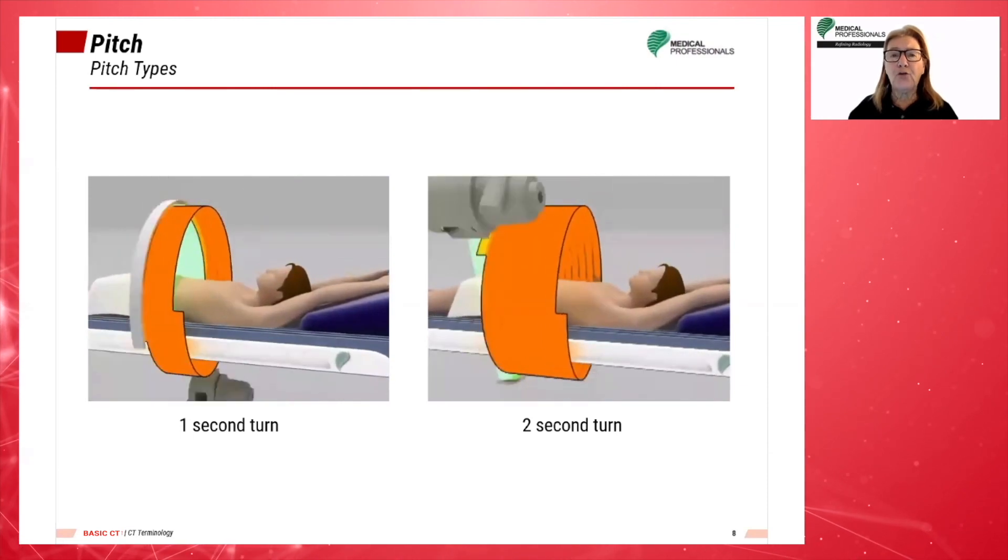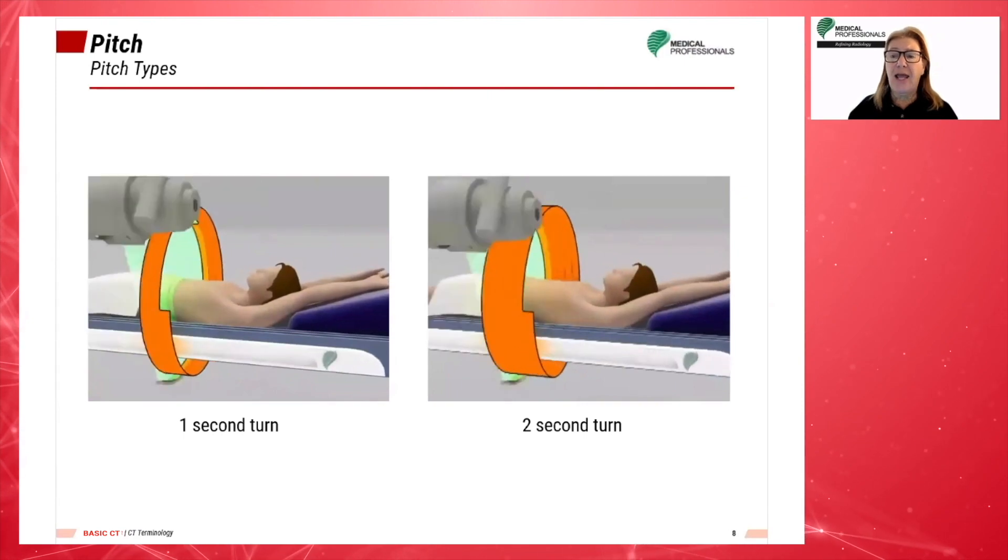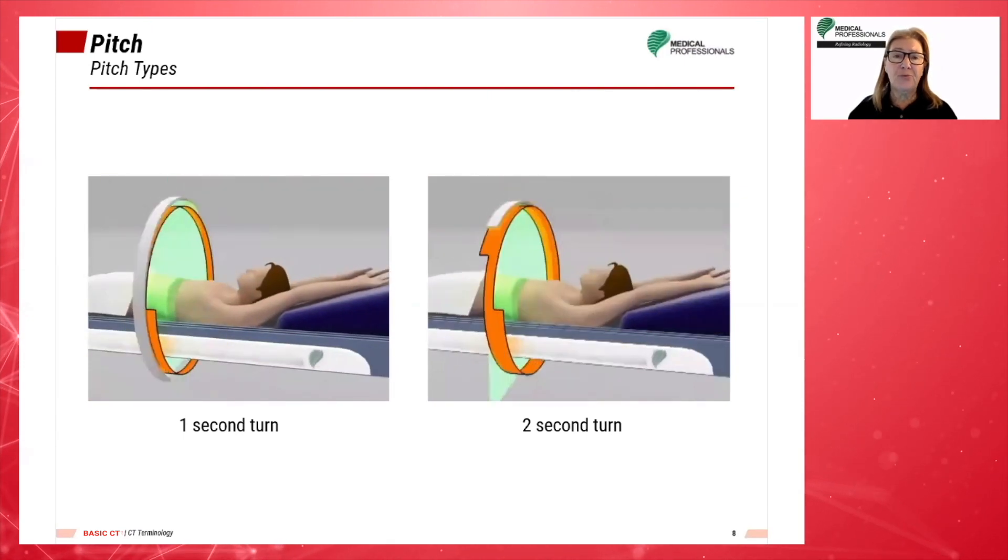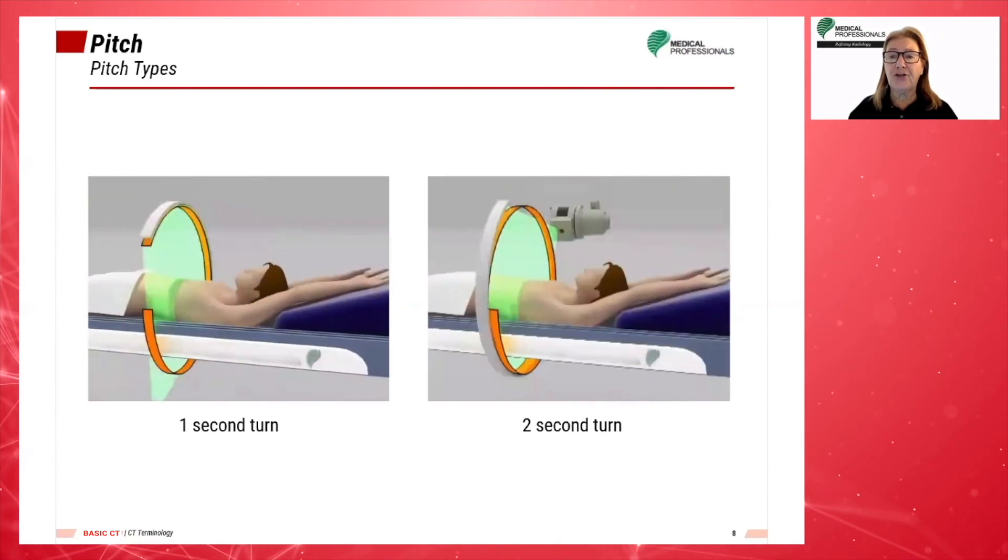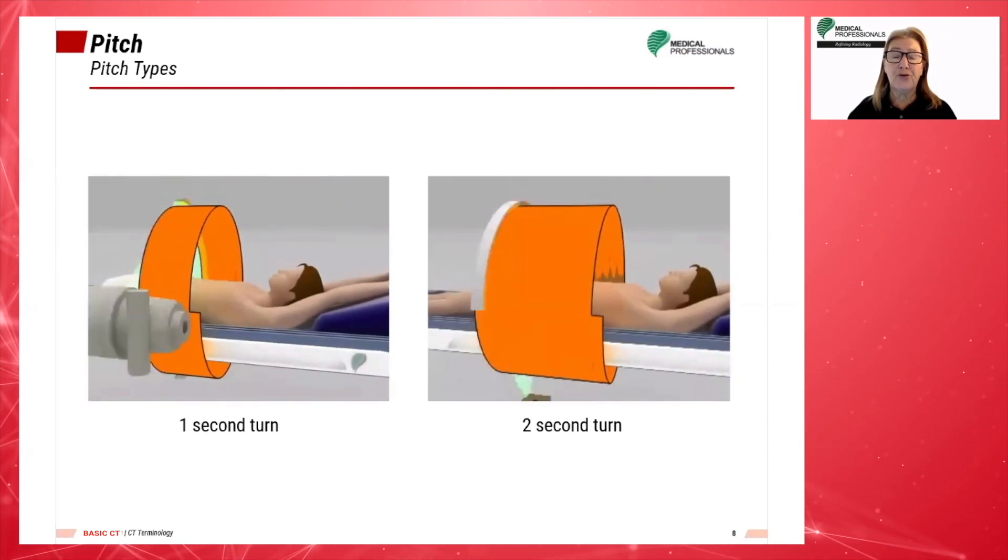When we increase the rotation speed of the detectors, acquisition time is reduced but the image becomes noisier. This is due to the system's inability to collect the maximum information per second.